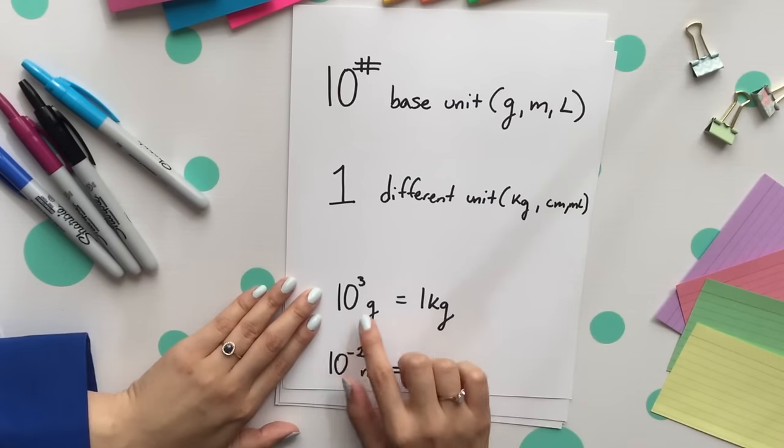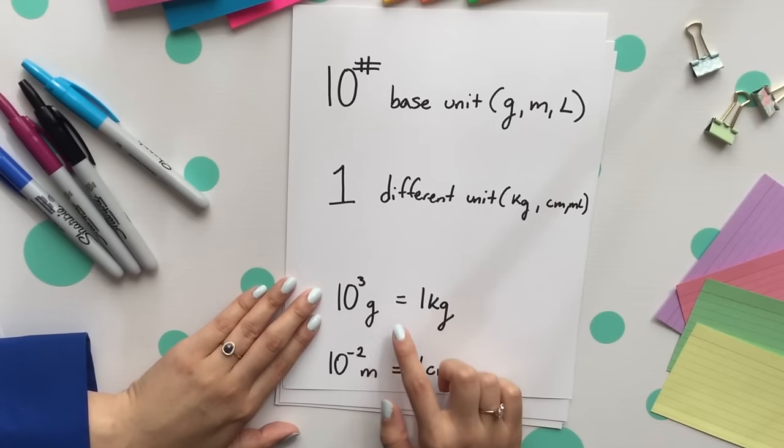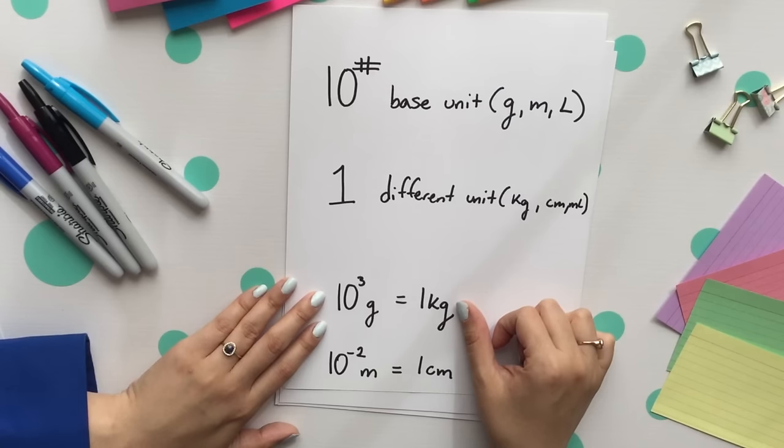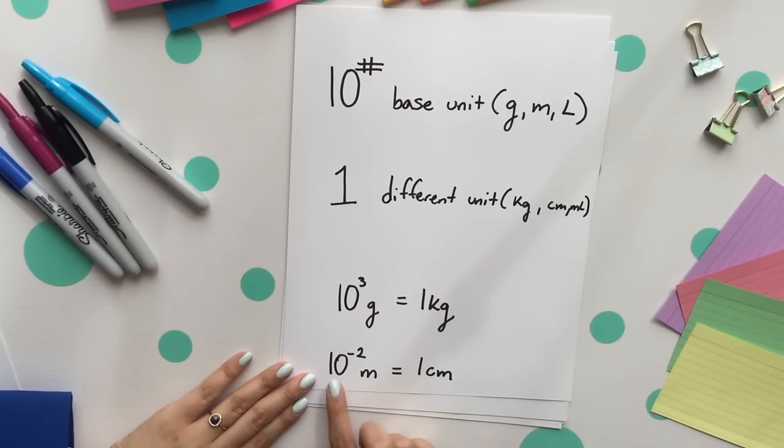For example, the 10 to the third goes with our base unit which is our grams and the one goes with the different unit which in this case is kilograms. Same thing goes with the 10 to the negative second. Our other base unit is meters and the one goes with our different unit which is centimeters.